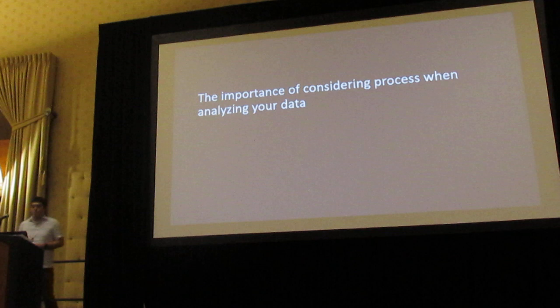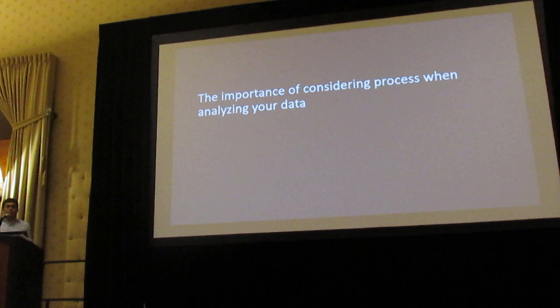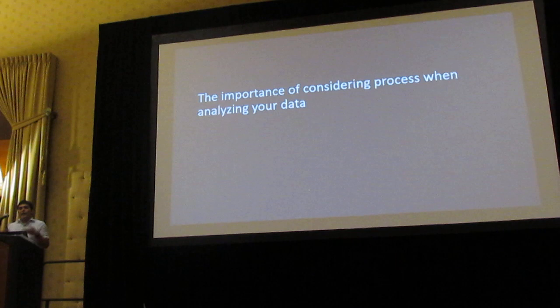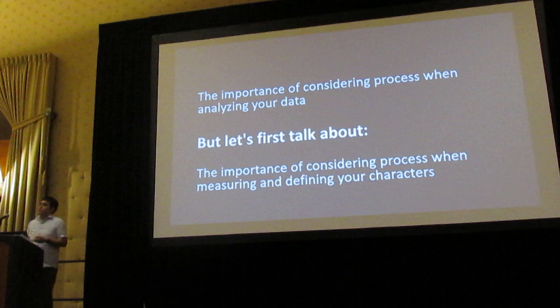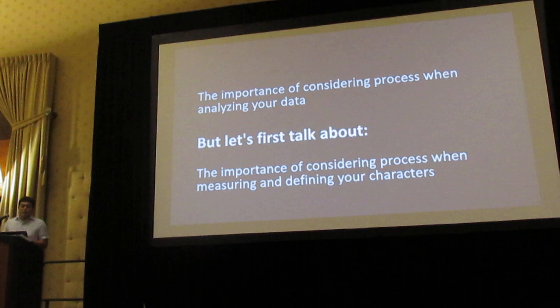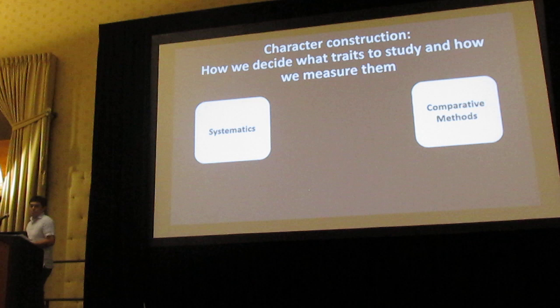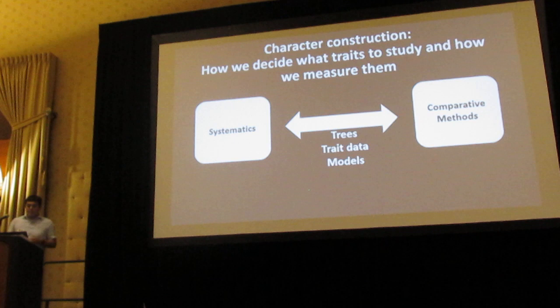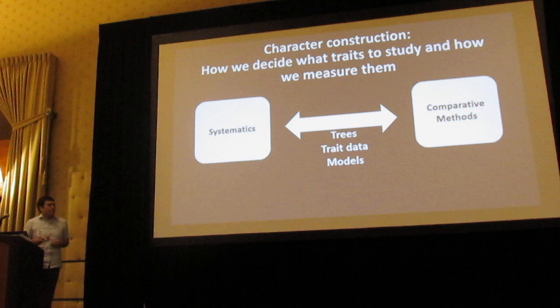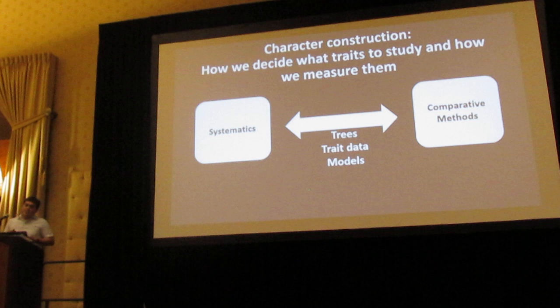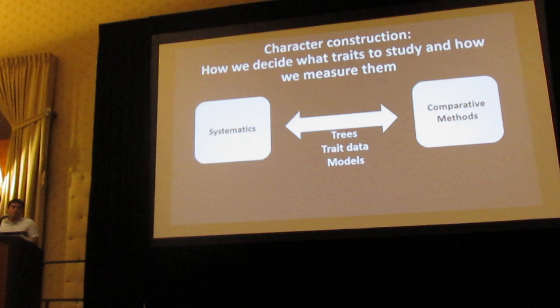Before we get to talking about the importance of considering process when analyzing your data, I want to talk about something I used to not think about at all: the importance of considering process when you're measuring and defining your character — the very first step of asking what are we going to study and how are we going to measure and define it. Comparative methods has a very tight relationship with systematics, from which we share data, models, and trees.